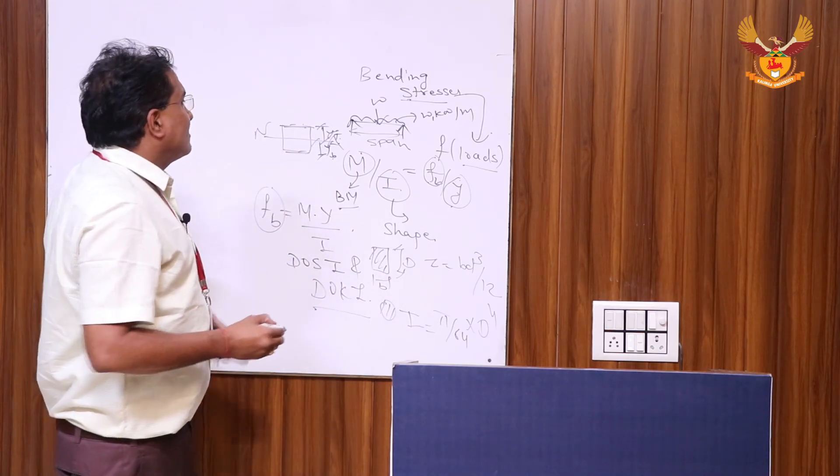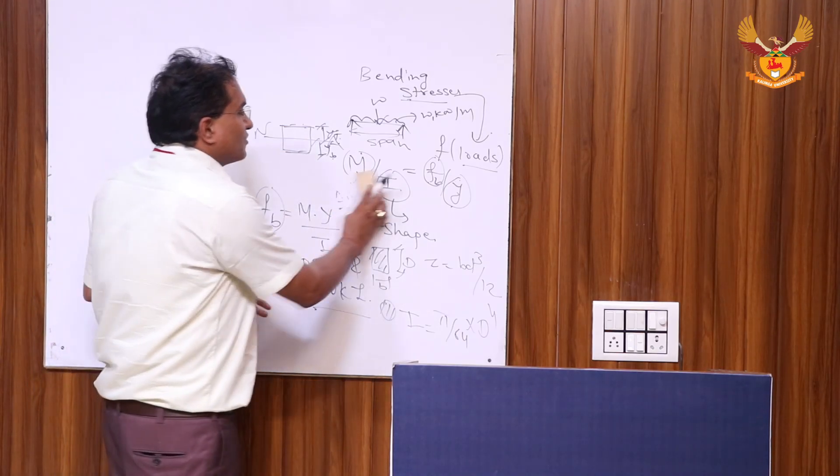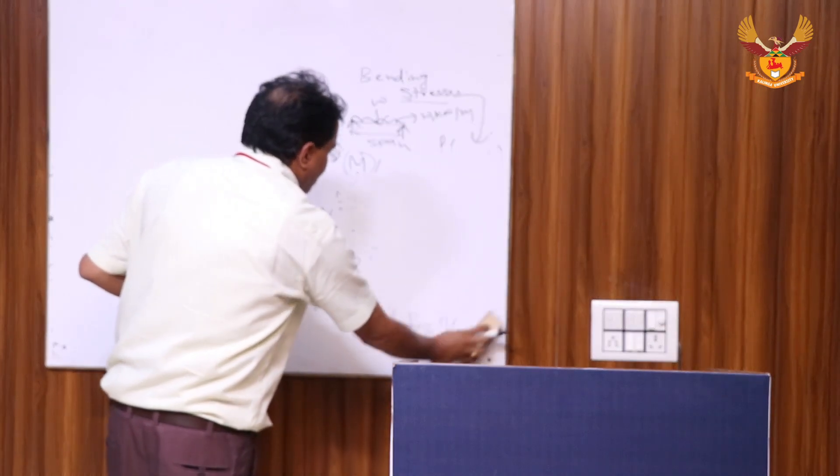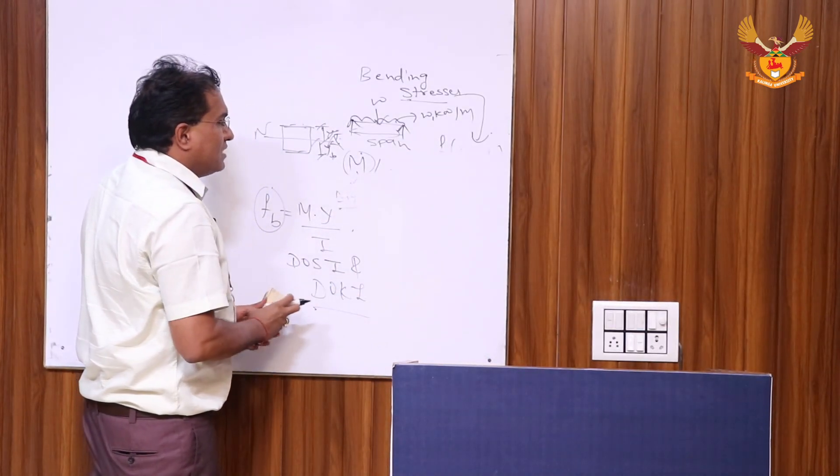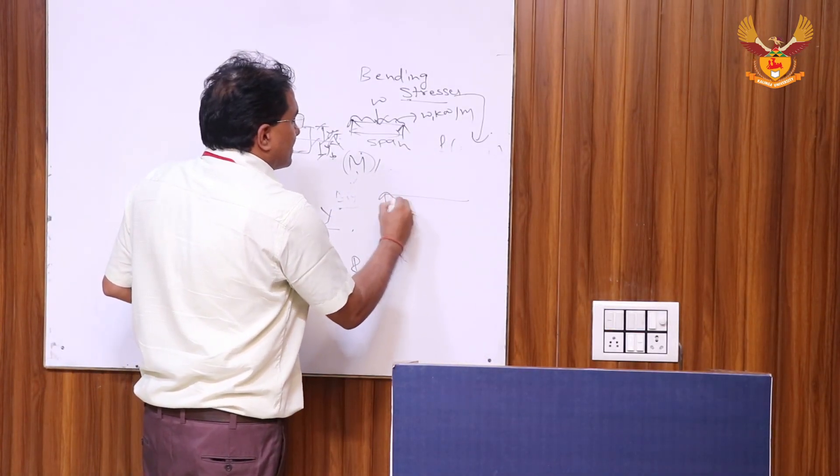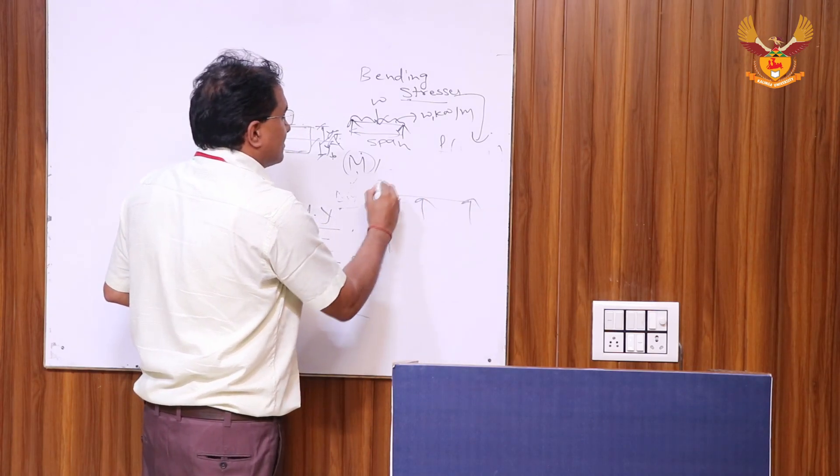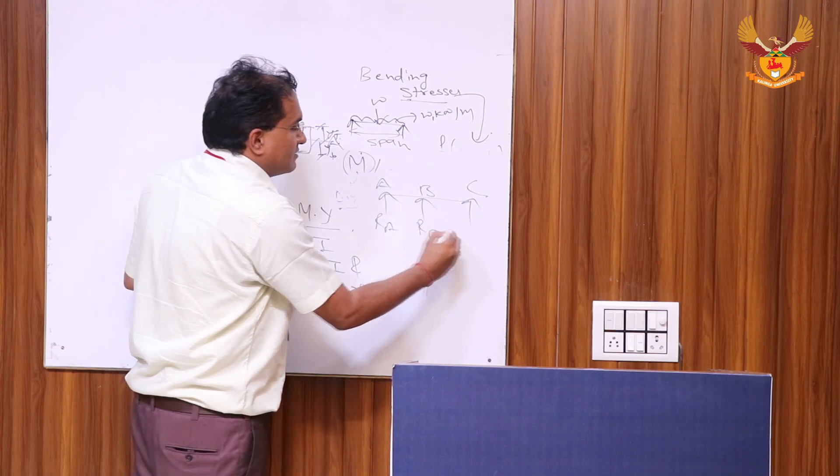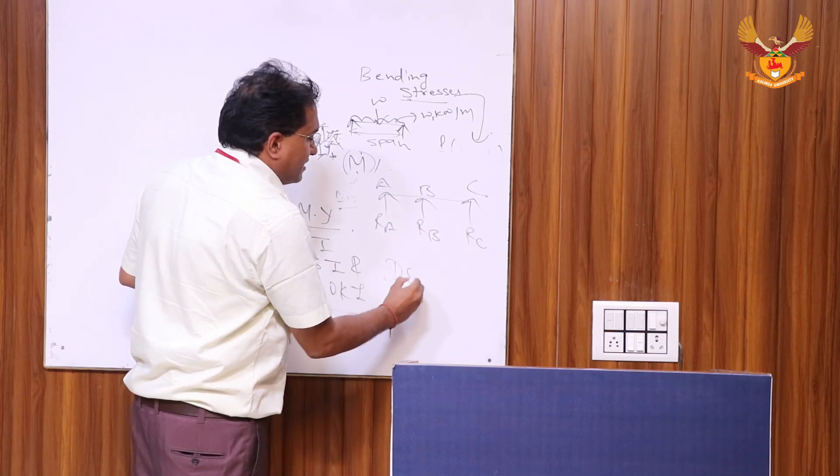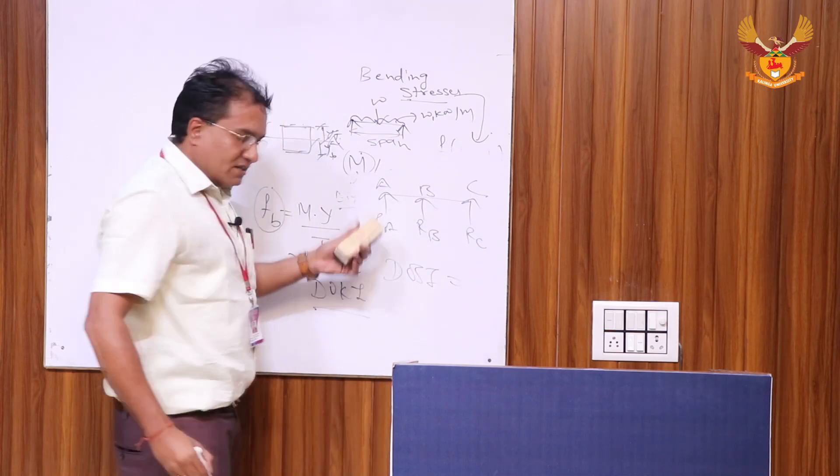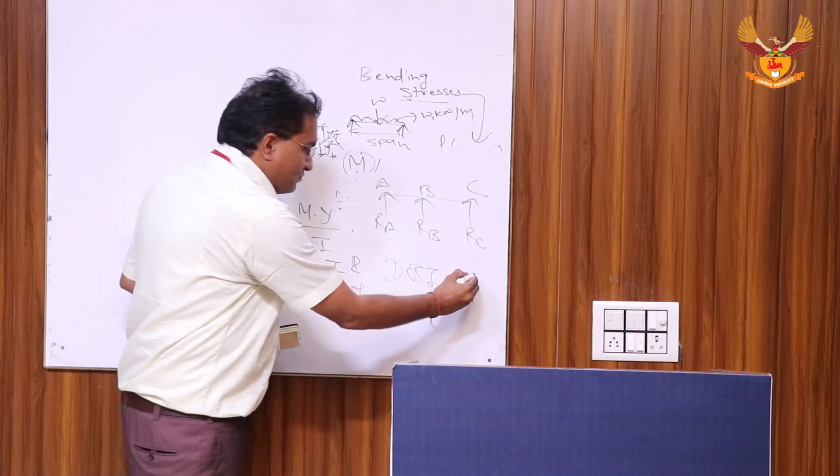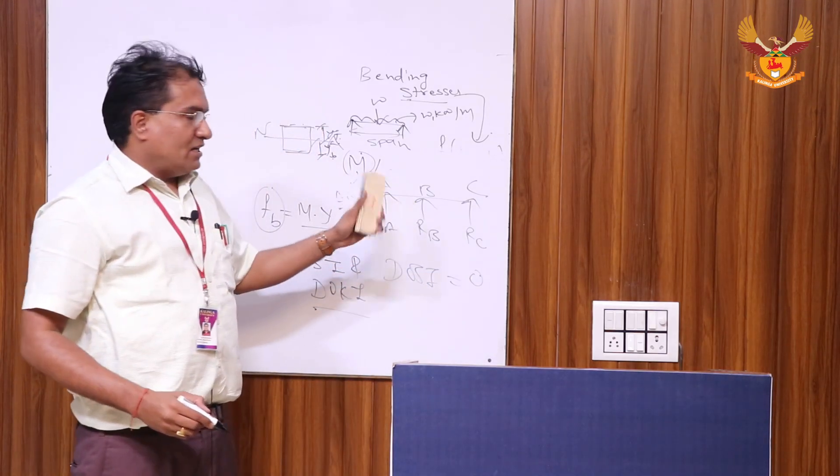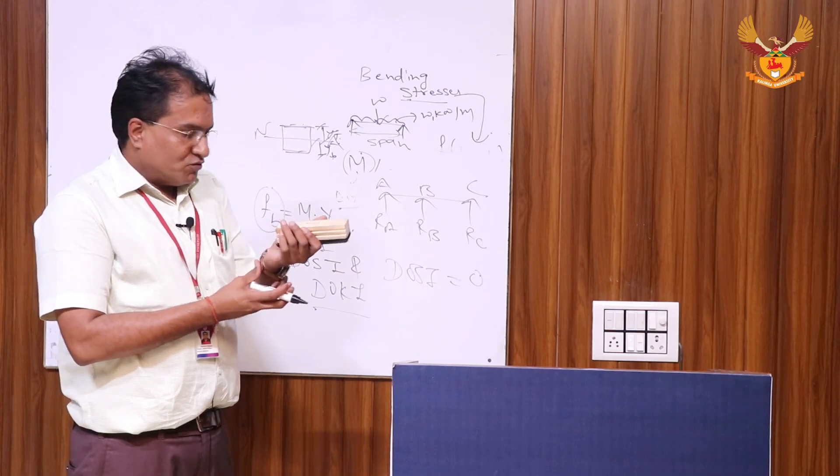Now let us take an example of determinate beam. In this determinate beam, these are the three reactions: RA, RB, RC. And DOSI - degree of static indeterminacy - in this is 0. Why? Because the equations of equilibrium which we are dealing with...